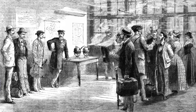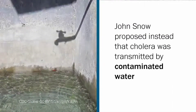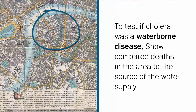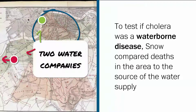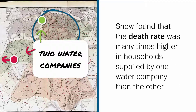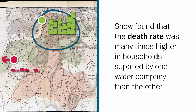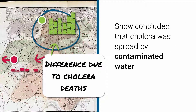John Snow did not agree with this and proposed instead that cholera was transmitted by contaminated water. When cholera returned to London in 1853, Snow noticed the high number of deaths in a particular area of south London. To test his theory that cholera was a waterborne disease, Snow compared the deaths in the area to the source of the water supply. In this area, water was supplied by two companies and residents could choose their supplier. Snow found that the death rate was many times higher in households supplied by one water company than the other. This excess in mortality could be attributed to cholera deaths, and so Snow concluded that the disease was spread by contaminated water. It turned out that one water company had clean water as it had moved its water source upriver, above the area where the River Thames was contaminated by sewage.